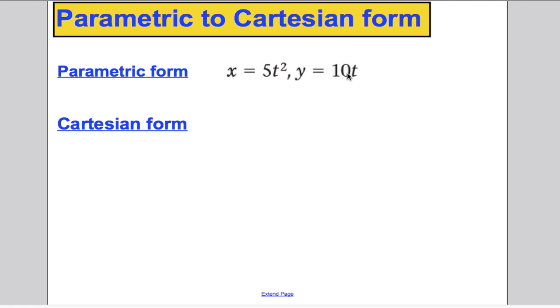So, one easy thing to do would be, from one of the equations, make t the subject. So, for example, maybe if I call that equation 1 and that equation 2, we could say from equation 2, you could say that t is certainly y divided by 10.